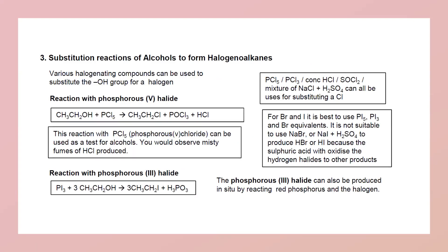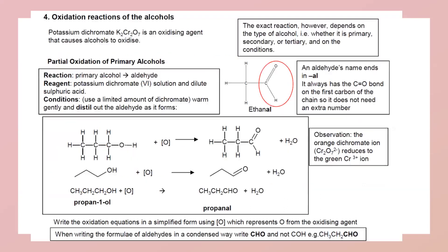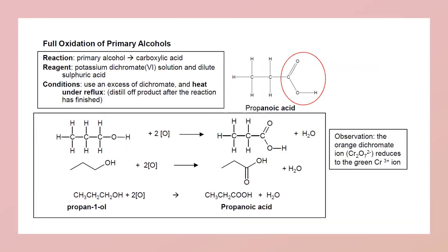In substitution reactions, we can convert alcohol into halogenoalkane by adding PCl₅ or PCl₃, or PI₅ or PI₃. A second way is to use sulfuric acid and sodium halide, but this is not valid for substitution of bromine and iodine, because they are good reducing agents and will reduce the sulfur to lower oxidation numbers.